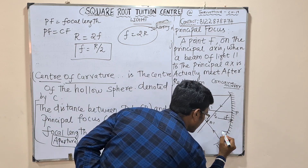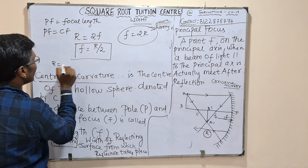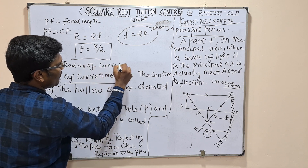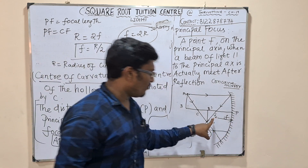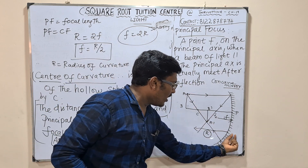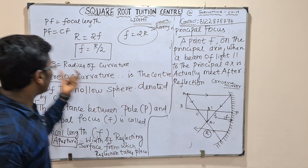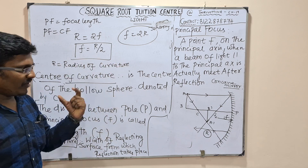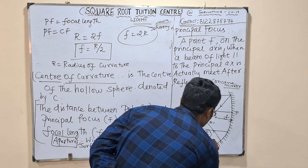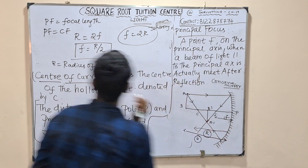R equals 2F. If we call the center of curvature R, that R is called the radius of curvature. So F equals R divided by 2. The focal length is half of the radius of curvature. All points are around the focal line.